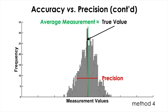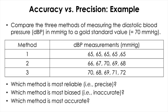I hope you now understand the difference between accuracy and precision of measurement. In a hypothetical study, say you developed three methods to measure blood pressure and want to see how each method compares against a gold standard — the best measurement method available. You measured blood pressure five times with each method, and from the collected data you want to find out which method is most precise, which is most biased, and which is most accurate.